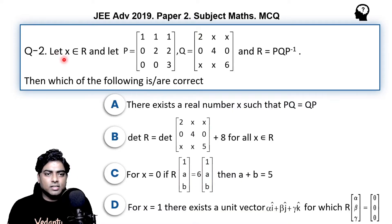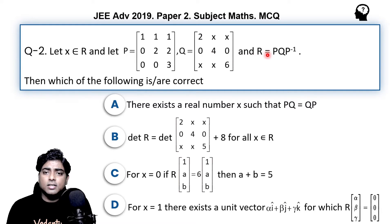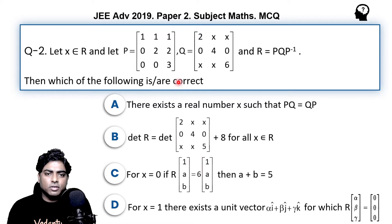It says: let x belong to the real numbers R, and let capital P be the matrix [1,1,1 / 0,2,2 / 0,0,3]. Capital Q is the matrix [2,x,x / 0,4,0 / x,x,6], and another matrix R is defined as PQP⁻¹. We need to determine which of the following options about R are correct.